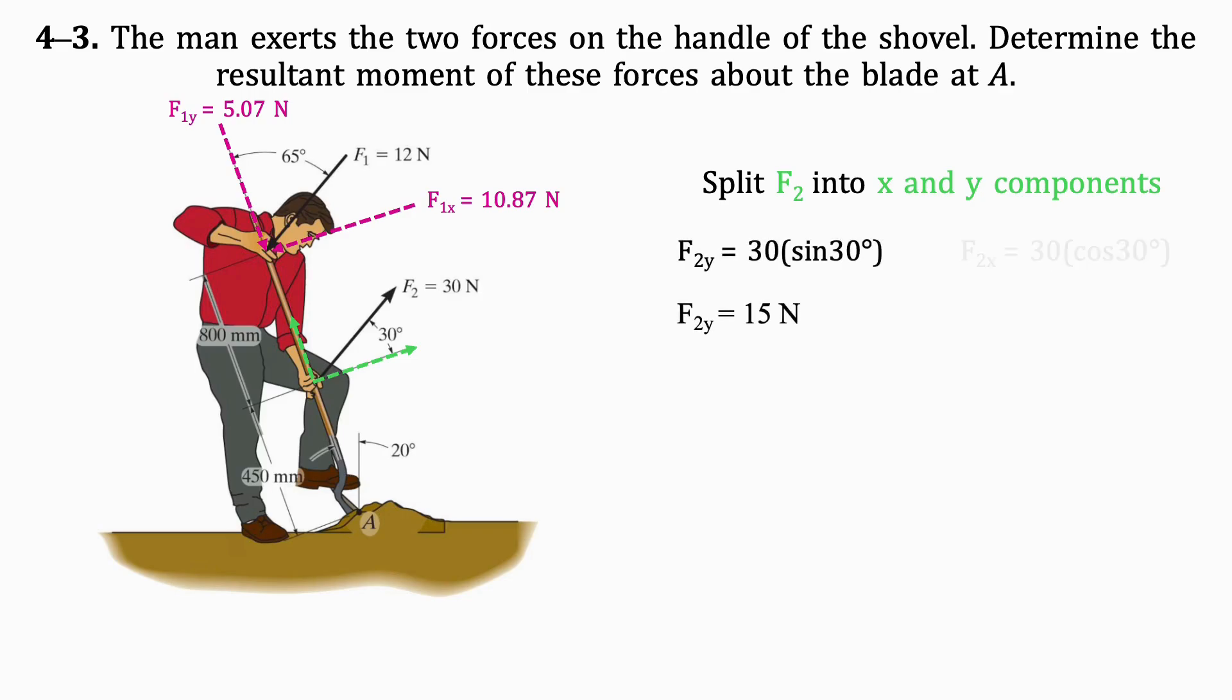Then, we split F2 into X and Y components using the given angle. By doing this, we get F2Y equals 15 newtons and F2X equals 25.98 newtons.